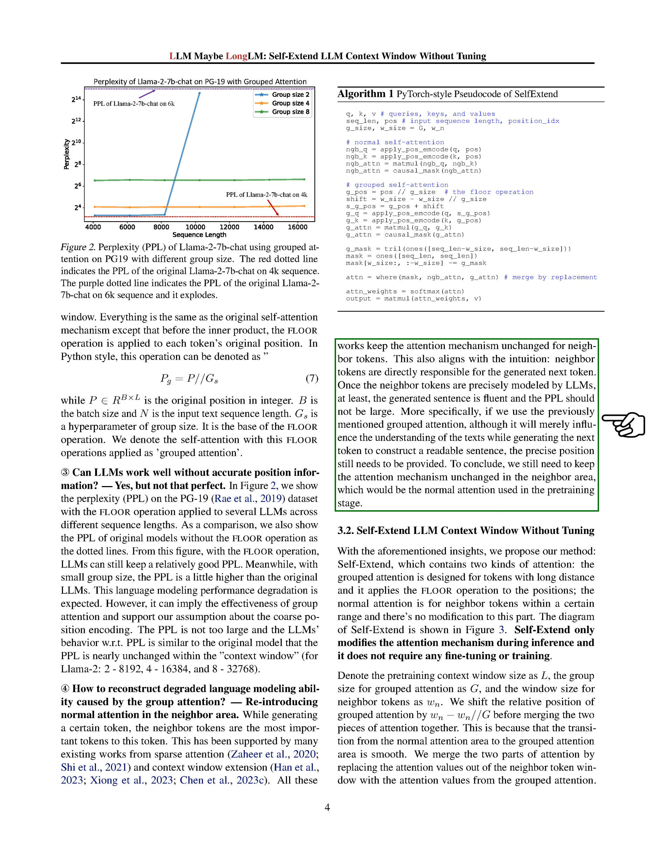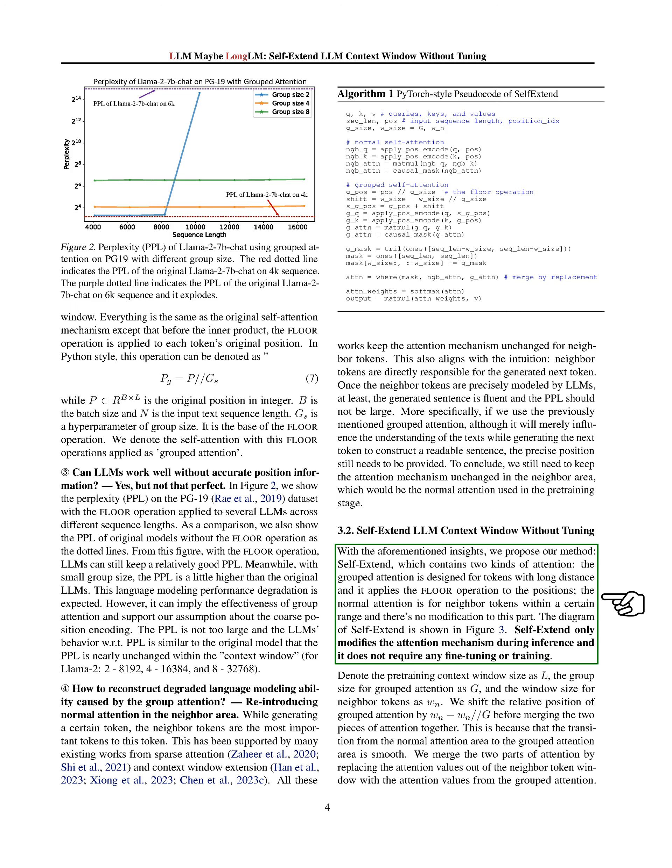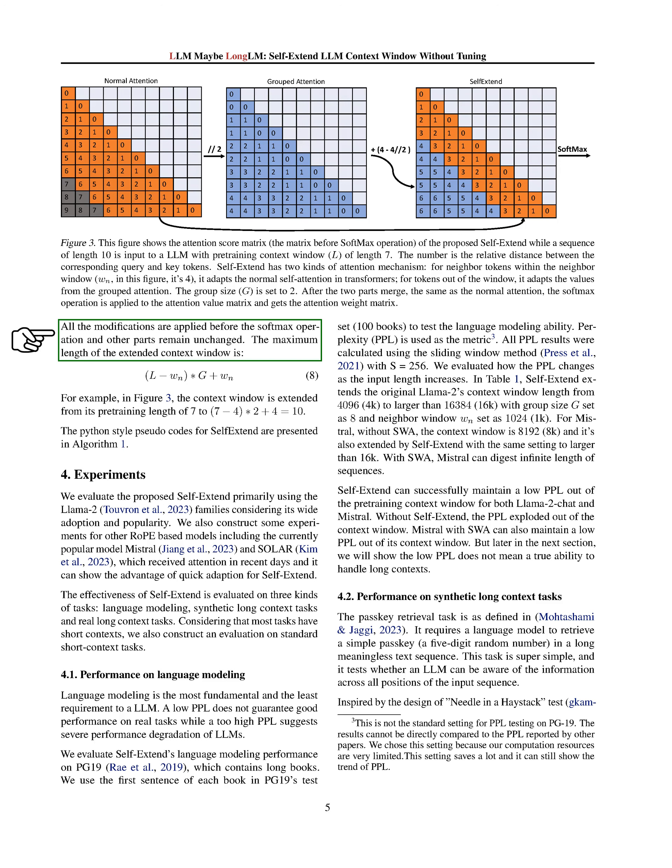We're introducing a new method called Self-Extend, which uses two types of attention: grouped attention and normal attention. Grouped attention is used for tokens that are far apart, while normal attention is used for neighboring tokens within a certain range. The self-extend method only changes the attention mechanism during the inference process and doesn't require any additional fine-tuning or training. We adjust the relative position of grouped attention before combining the two types of attention, ensuring a smooth transition from the normal attention area to the grouped attention area. We then replace the attention values outside the neighboring token window with the attention values from the grouped attention, and all these changes are made before the softmax operation.